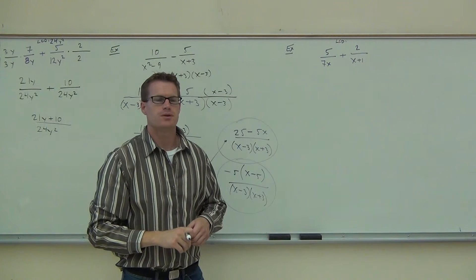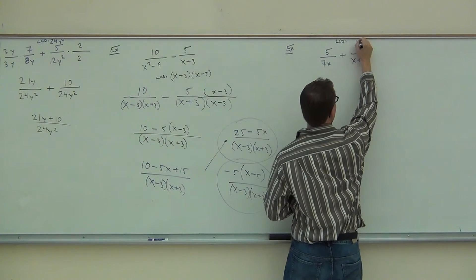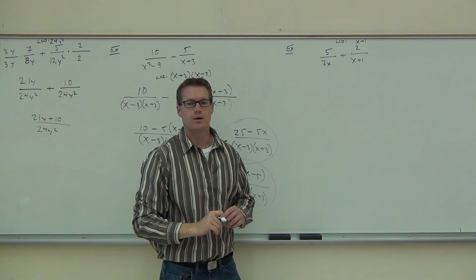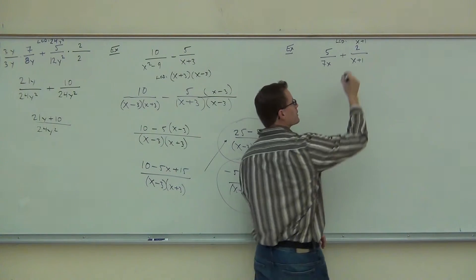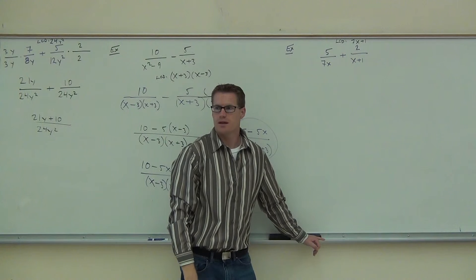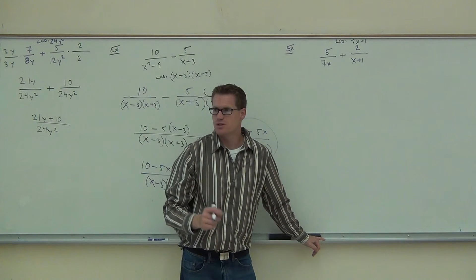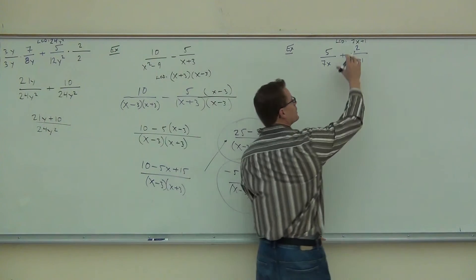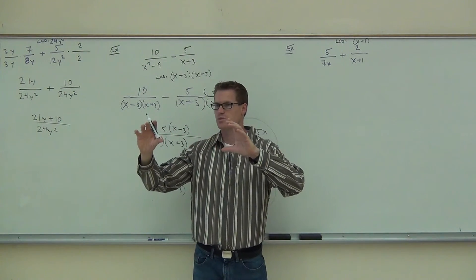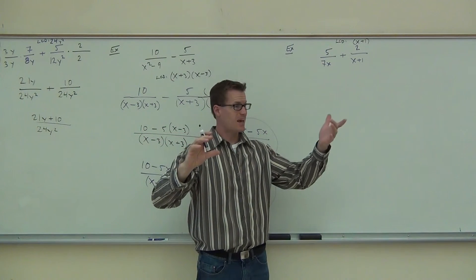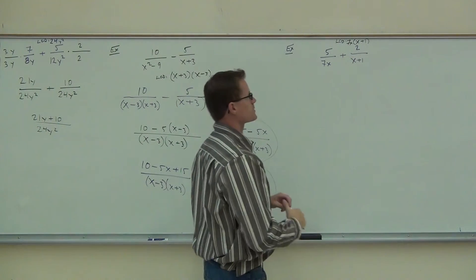The LCD must include all the different factors. X plus 1 definitely has to be there. But you also need the 7—however, you can't just write 7x plus 1 like that, because what you've done is changed something from a factor to a term. The 7 has to be a factor. So x plus 1 has to be written by itself, and we're also missing the x separately. So our LCD is 7x times x plus 1.